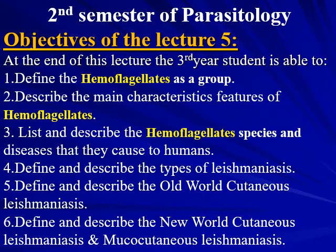At the end of this lecture, you will be able to define the haemoflagellate as a group, describe the main characteristic features for the haemoflagellate, describe and list the species of haemoflagellate and diseases caused to humans, define and describe the types of leishmaniasis, and describe the old-world cutaneous leishmaniasis as well as the new-world cutaneous and mucocutaneous leishmaniasis.